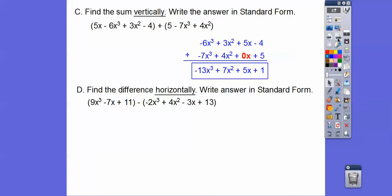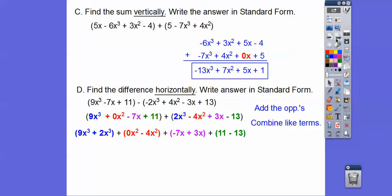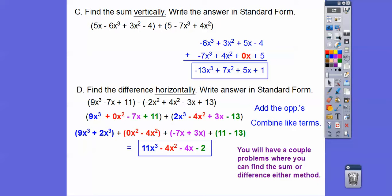And then this says find the difference horizontally. So write it in standard form. Let's first add the opposites right there. Notice we inserted a 0x squared right there. And then let's combine all the like terms, the x cubed, the x squareds, the x's and the 3's and put them together. So this is how we do it horizontally. If we don't do it like this, then you're not going to get credit. So just be aware. This is how us four teachers want you to do it, because this is what we're doing in our textbook. So 9 plus 2 is 11x cubed and then this will be a minus 4x squared, minus 4x and then minus 2.